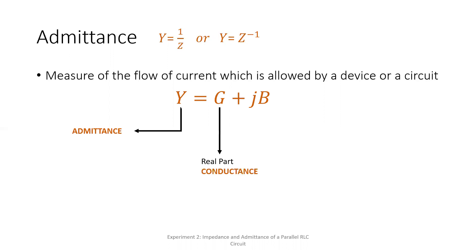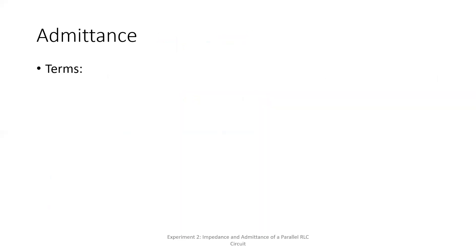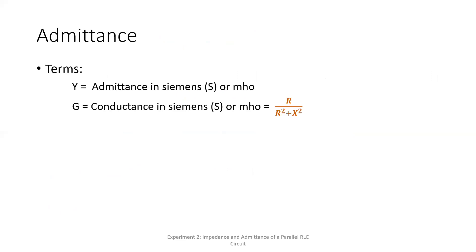For admittance, Y is the total admittance and G is the conductance — the real part. The imaginary part is B, the susceptance. The units for admittance Y, conductance G, and susceptance B are all Siemens, also called Mho. Mho is just 'Ohm' spelled in reverse.